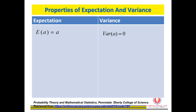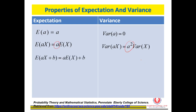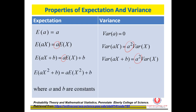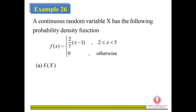For the expectation, we have E(a) equals a for any constant, and variance of a constant equals 0. Then for E(aX), the expectation is a times E(X), and for the variance we have a squared.